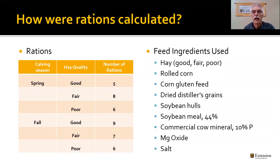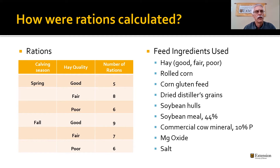I used a variety of ingredients with the different qualities of hay, in combination with rolled corn, corn gluten feed, distillers grains, soybean hulls, soybean meal, commercial cow mineral, magnesium oxide, and salt.